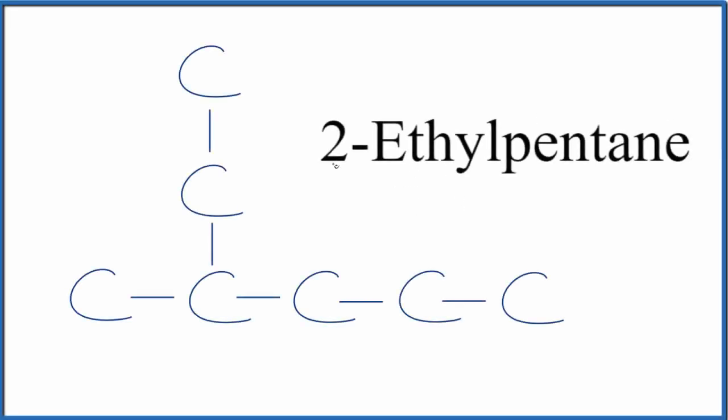If you're asked to draw the molecular structure for 2-ethylpentane, you might draw something like this. You have pentane, that means you have 5, and it's an alkane, all single bonds.